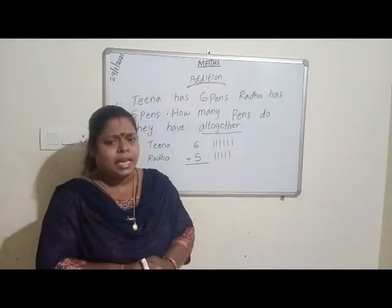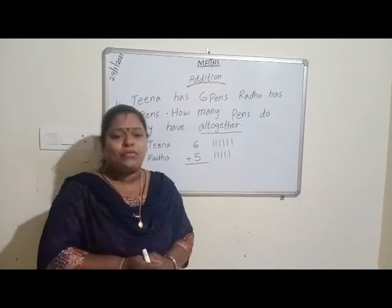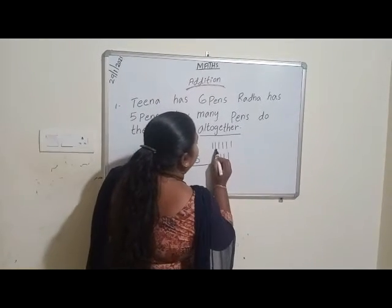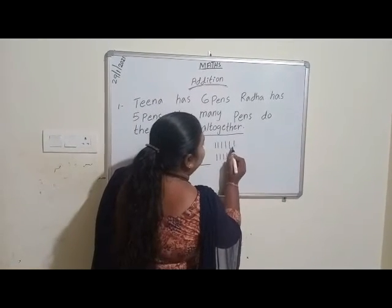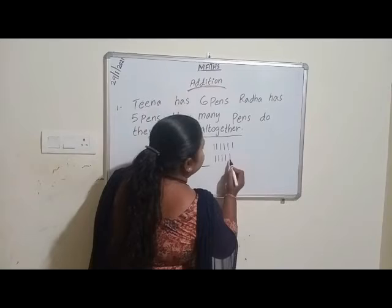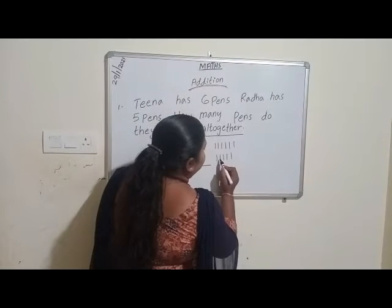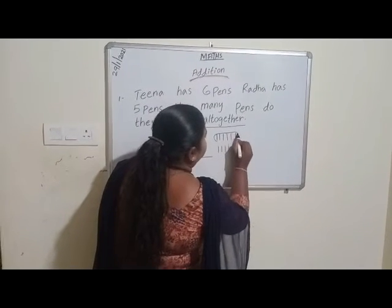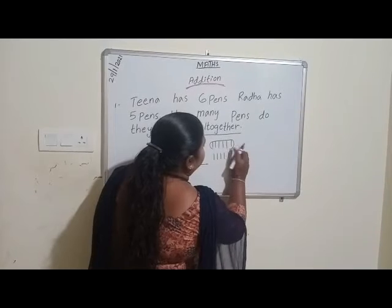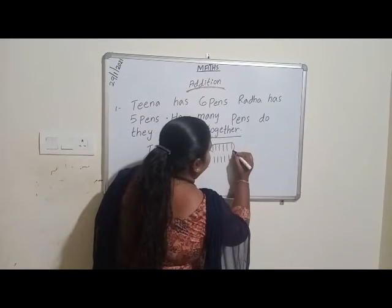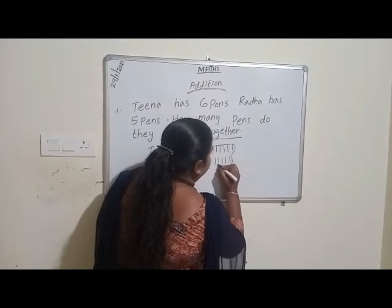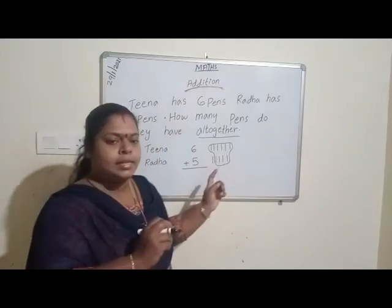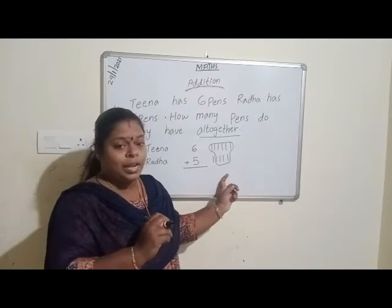Now, let's make a bundle of 10. 1, 2, 3, 4, 5, 6, 7, 8, 9, 10. This is our bundle of 10.